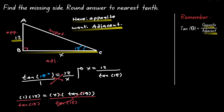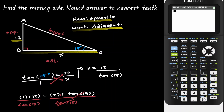Let's find this value using our calculator. Start by entering the numerator 12, then divide. Place the whole denominator in parentheses: open a parenthesis, press the tangent button, evaluate at 15, close the inner parenthesis from the tangent, then place a second closing parenthesis to close the whole denominator. Press Enter and here we have our result: 44.78. Because we want to express our answer to the nearest tenth, let's write it as 44.8.